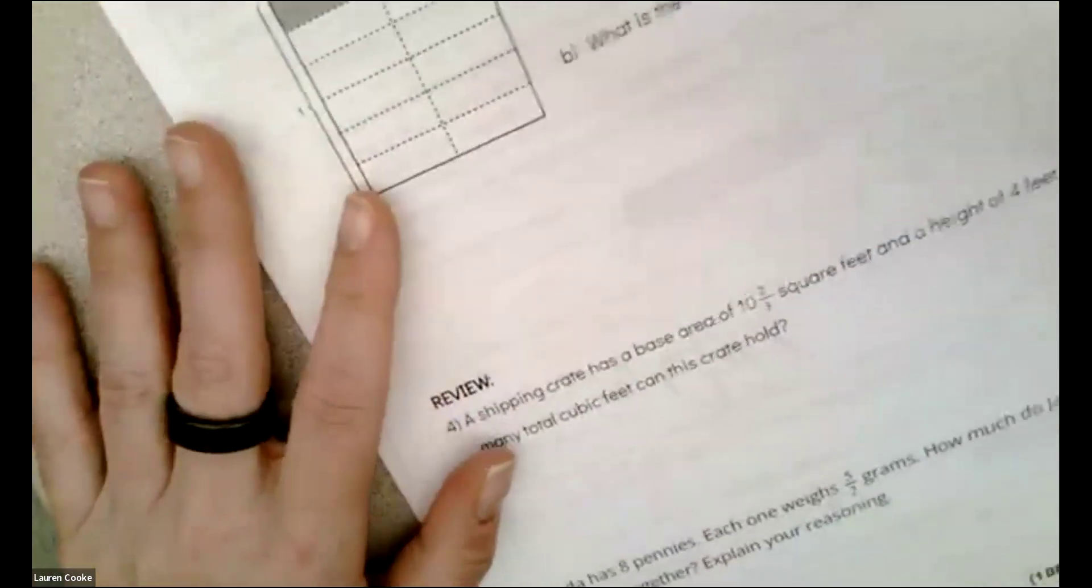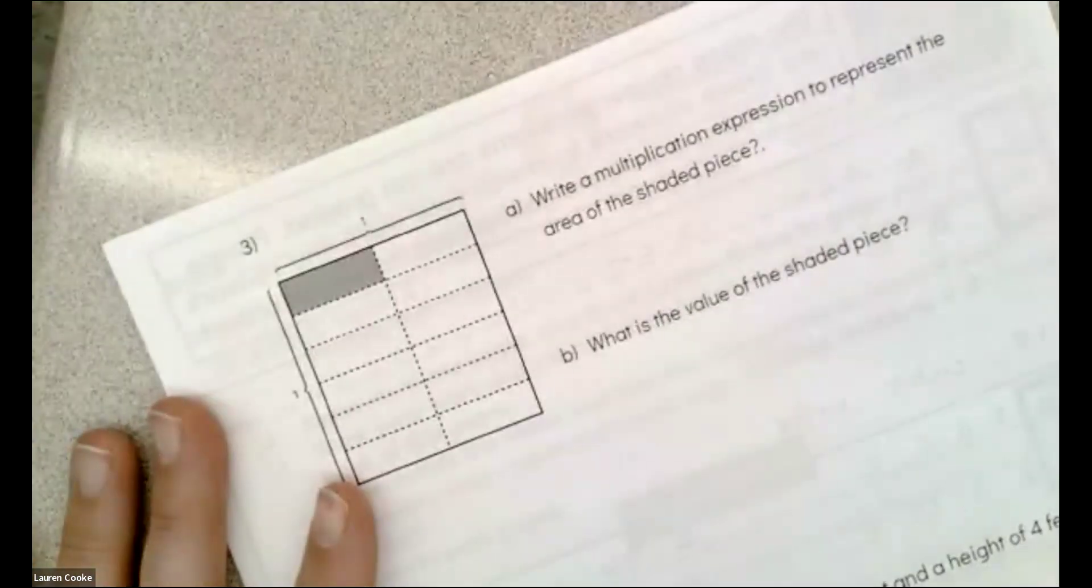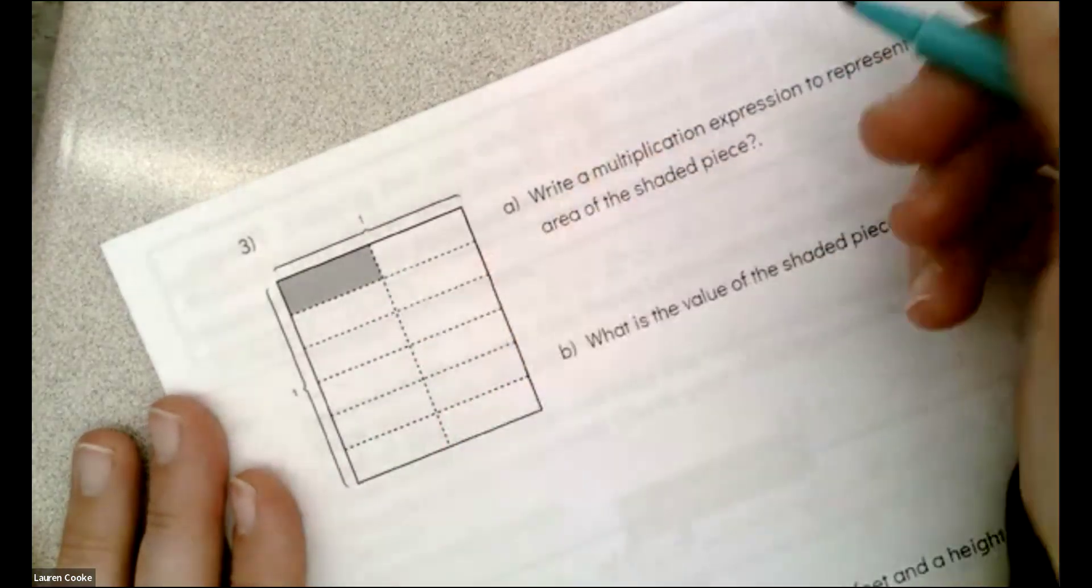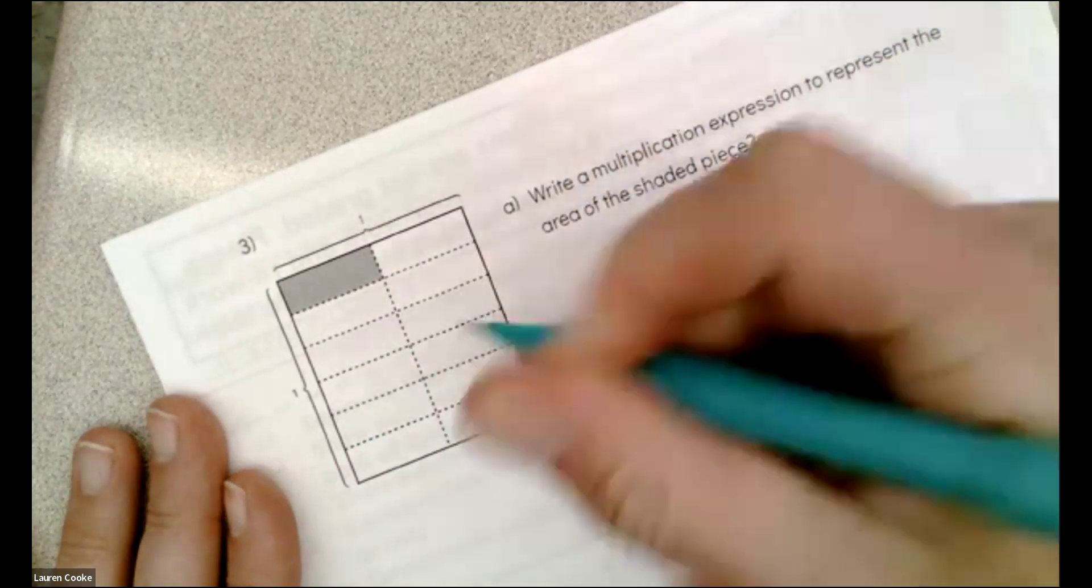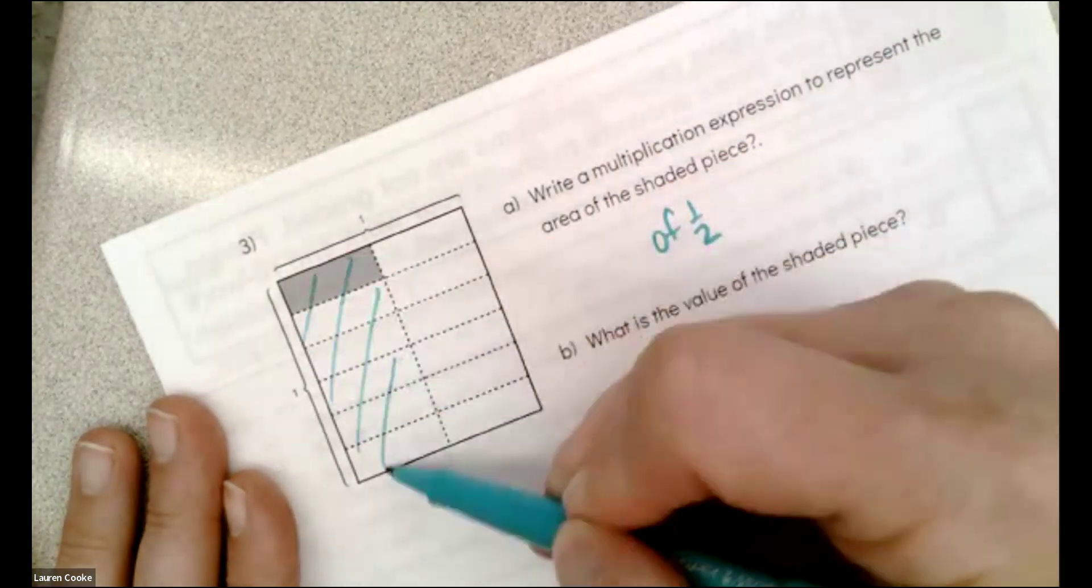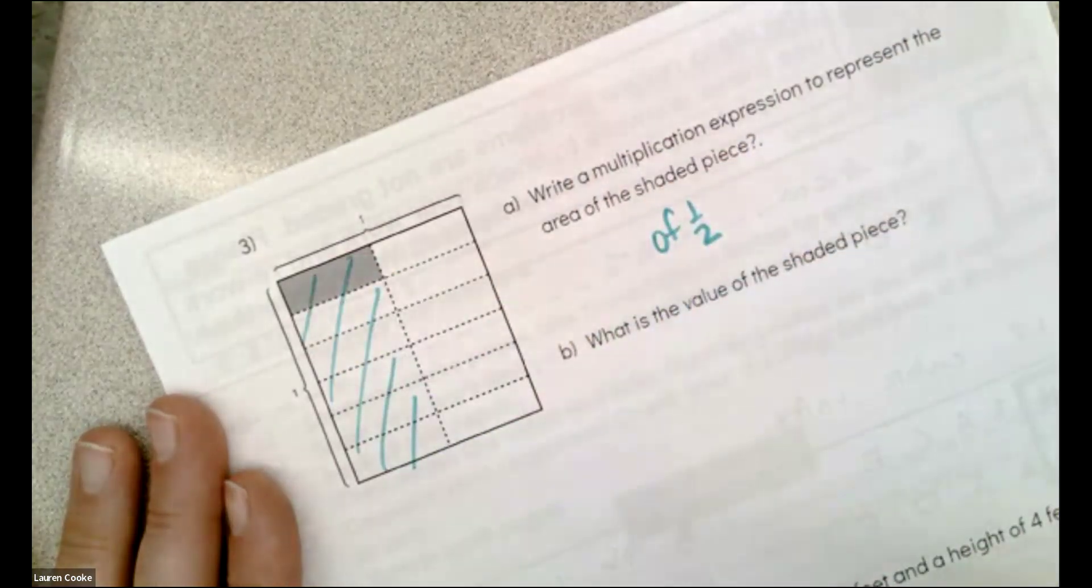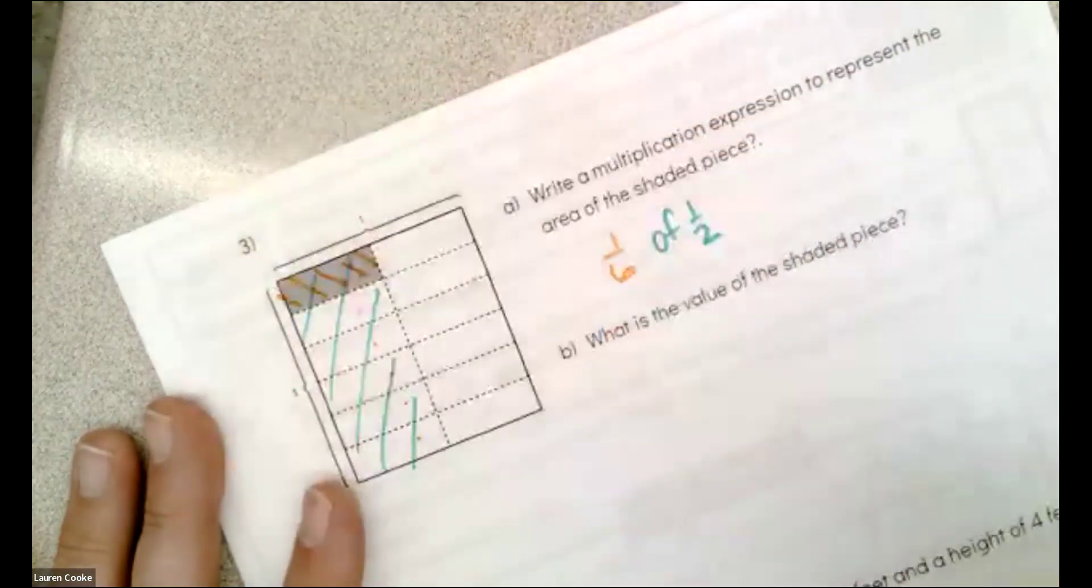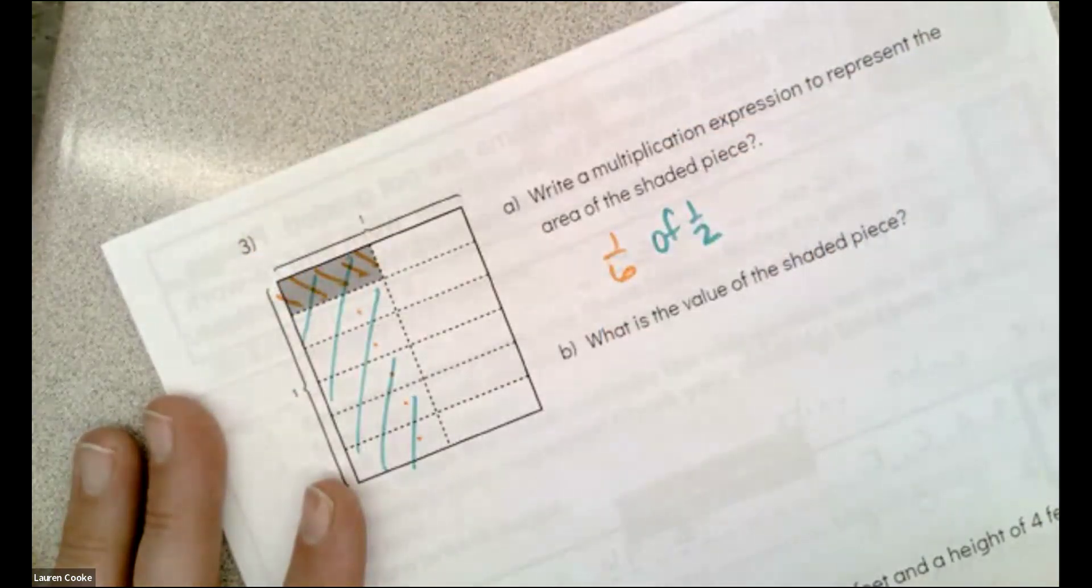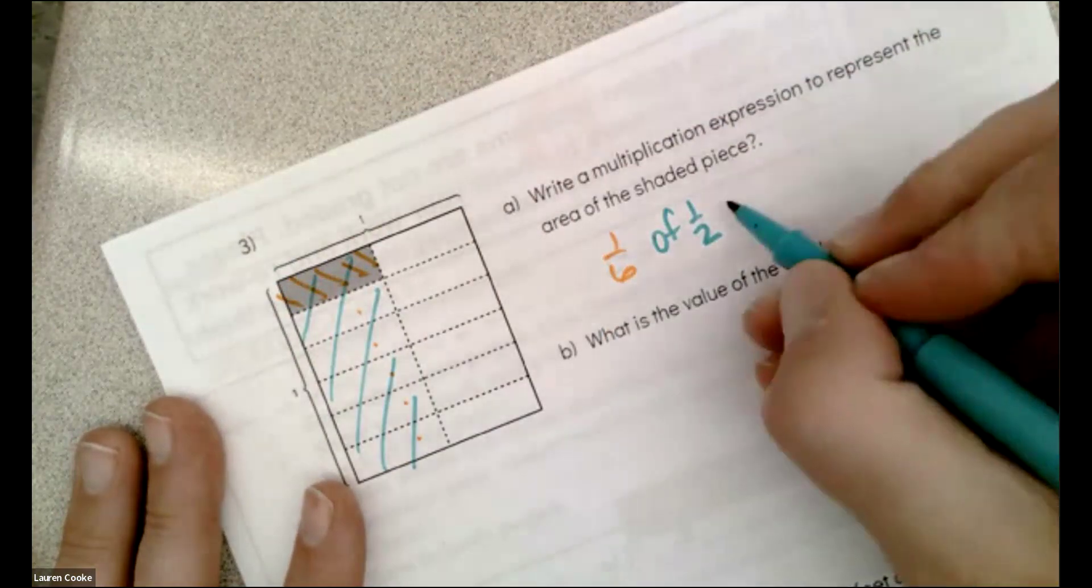With a couple more I'm going to leave for you to have graded. I'm going to write a multiplication expression to represent the area of the shaded piece. Well first it looks like I have of one-half, right, that's what it started out as, the of. And then it looks like the one-half was split into one, two, three, four, five, six. So it looks like I have one-sixth of one-half.